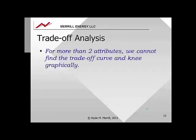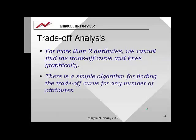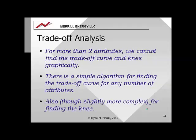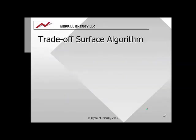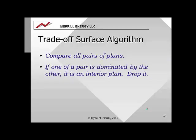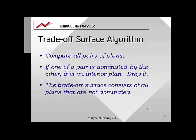For trade-off analysis with more than two attributes, you can't find the trade-off curve and knee graphically. There is a simple algorithm for finding the trade-off surface for any number of attributes, and a slightly more complex algorithm for finding the knee — both work for any number of attributes. The algorithm for finding the trade-off surface is: compare all pairs of plans. If one plan of a pair is dominated by the other, it is an interior plan and you drop it. When complete, the trade-off surface consists of all plans that have not been dropped.